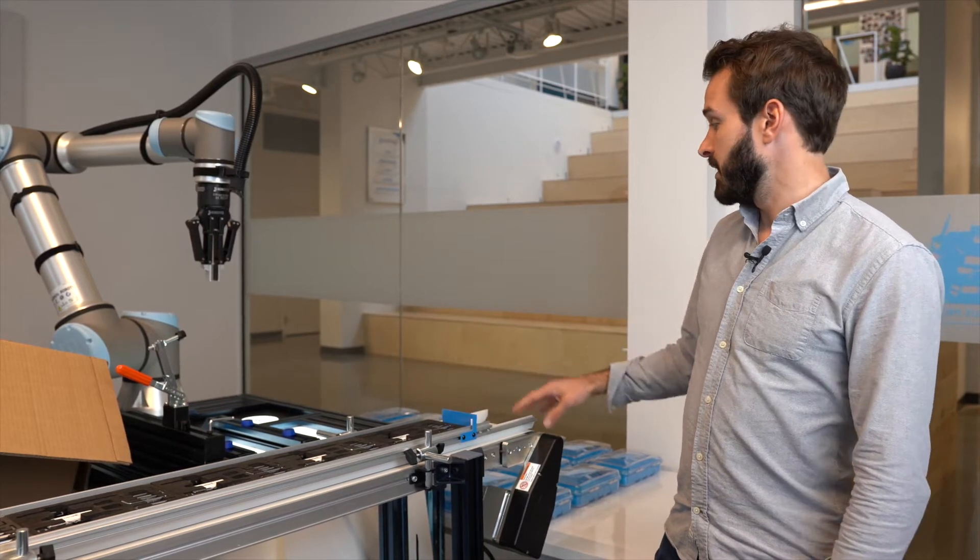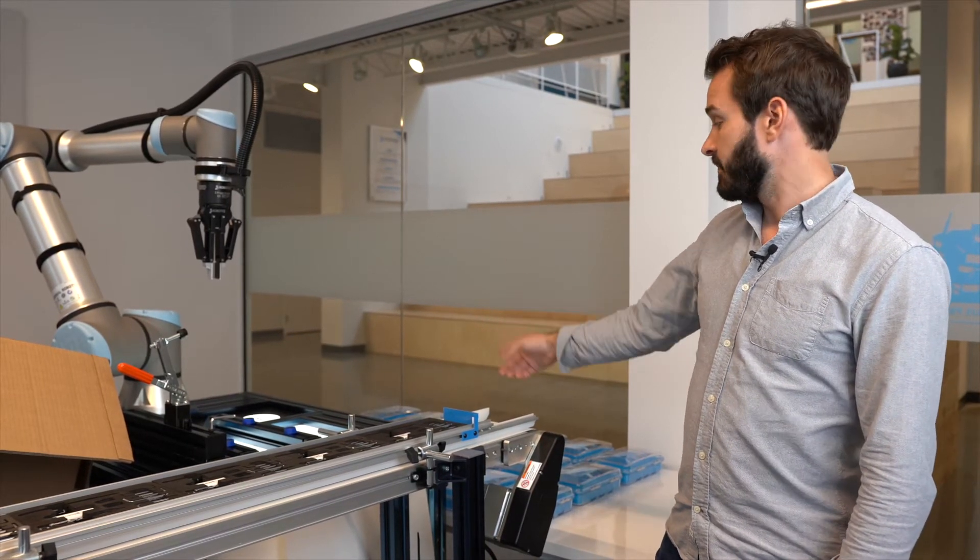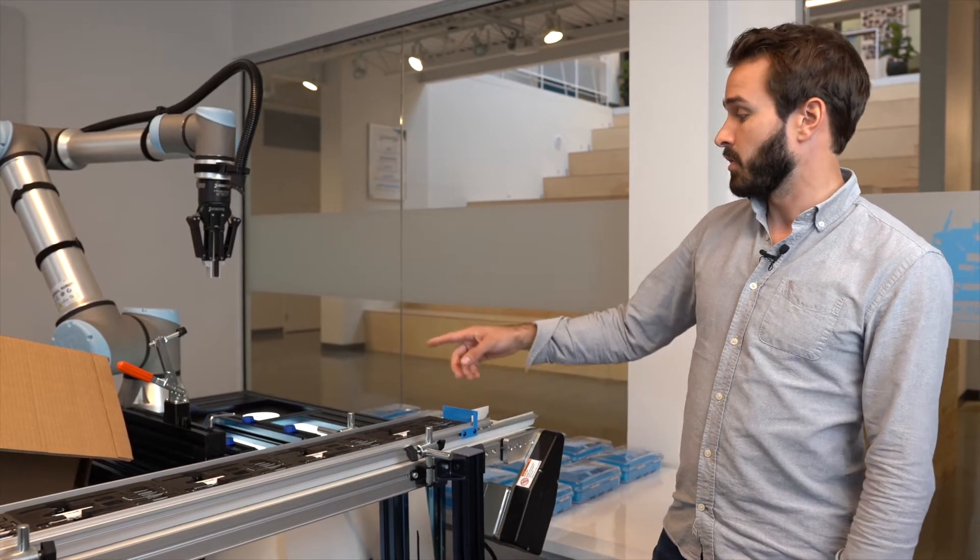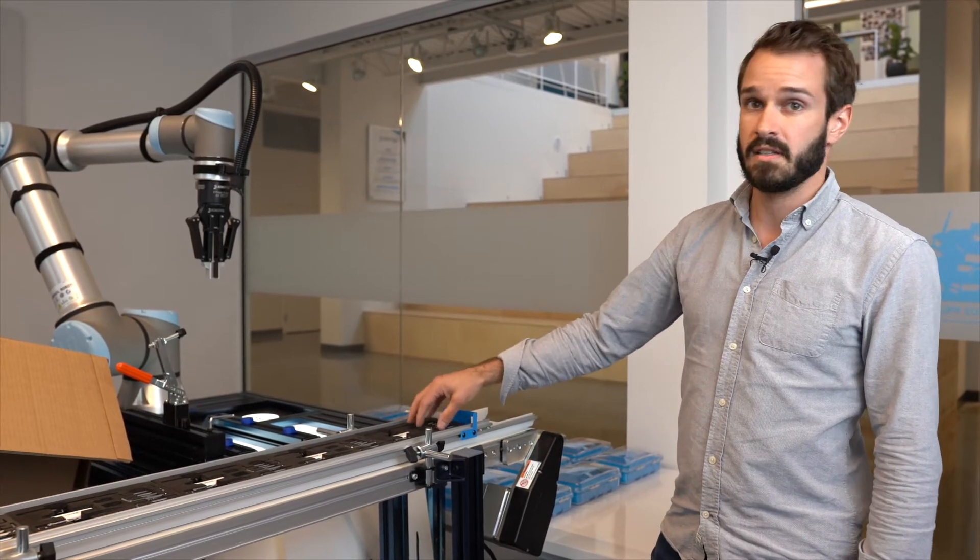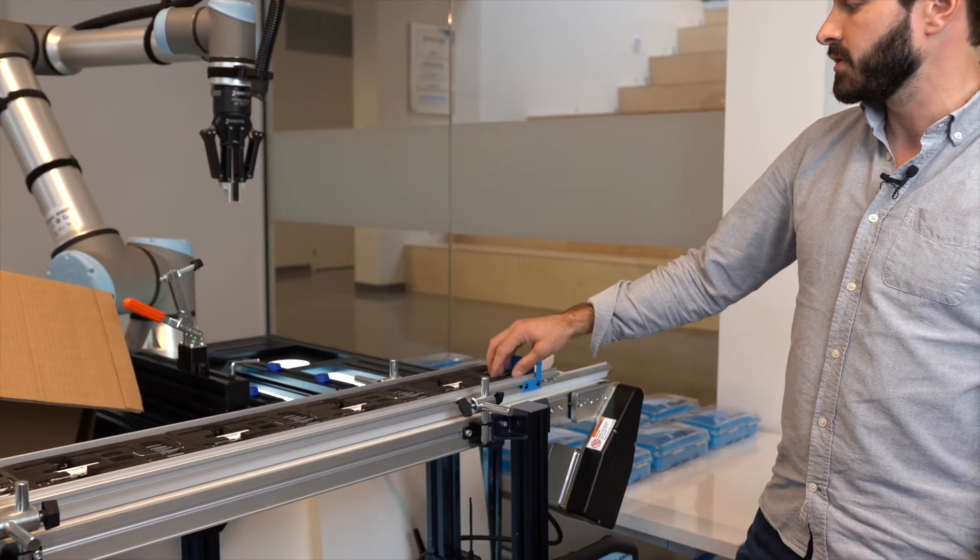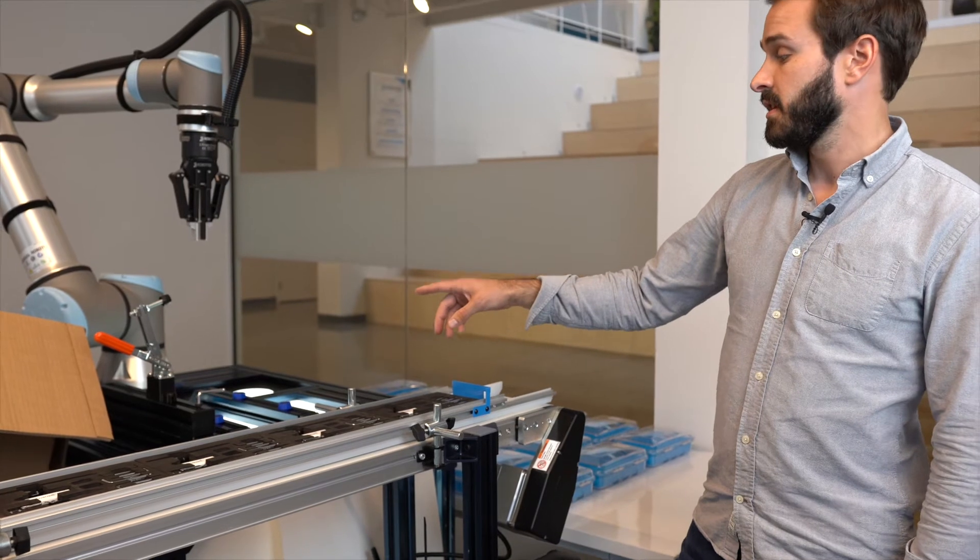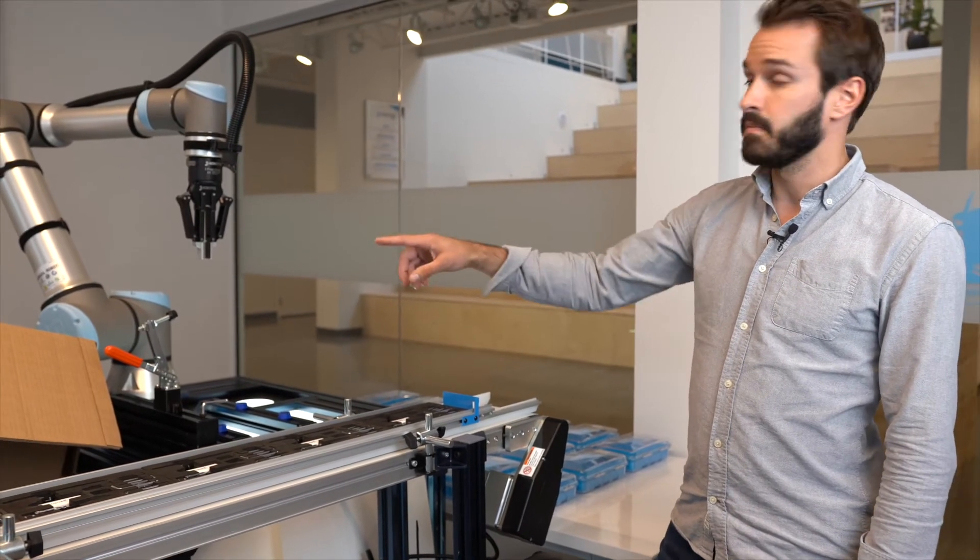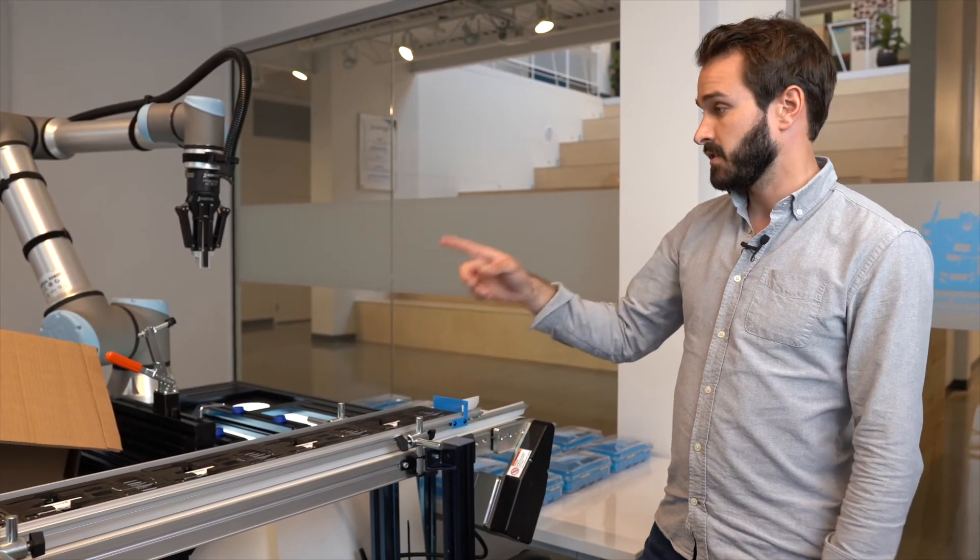What we're doing here is taking one of our Promo Kit cases that are empty, opening them with the robot, then placing the foam that has all the different tools. We're putting the foam inside the Promo Kit case, reclosing it and then packing it in the carton case that's over there.